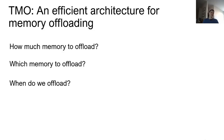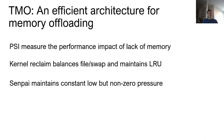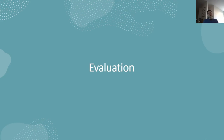Going back to the questions Niket asked at the beginning — how much memory to offload, which memory to offload, and when — the three components answer all these questions. PSI tells us the performance impact of lack of memory, so we offload just enough that PSI starts to show some impact. For which memory, rather than expensive page table scanning, we rely on kernel reclaim to maintain LRU and, with our changes, balance file and swap. Finally, Senpai maintains constant low but non-zero pressure so we are constantly offloading memory. Niket is now going to talk about evaluation.